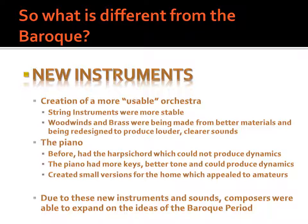One of the biggest changes was the development of the piano. The Baroque had used the harpsichord, the most popular keyboard instrument especially because of the basso continuo, but the harpsichord could not produce dynamics and was very limited in tone color. The piano had more keys, better tone color, and could produce dynamics. Small versions of the piano were created that were not too expensive and fit in the home, making it ideal for amateur musicians and the middle class. The piano became super popular, and everyone wanted music written for it rather than the harpsichord.